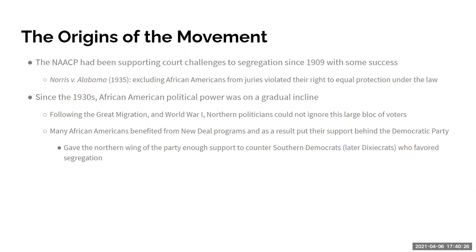The African-American move to the north and west began to force the Democratic Party to change its focus. Instead of being a southern, pro-segregation party, the Democratic Party began to be the party of civil rights, advocating for the end of segregation and Jim Crow. That's because of African-American influence — they began putting their political weight behind this party and started leading that change.